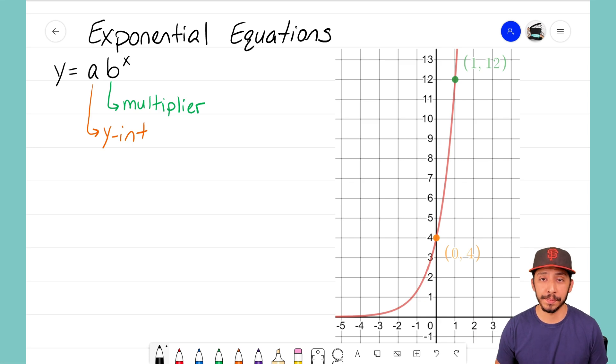When trying to write out an exponential equation, it's very important that we determine what the a term is and what the b term is. What's your y-intercept? What's your multiplier? Well, I have a graph right here that we can see. It's an exponential curve.